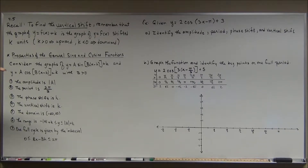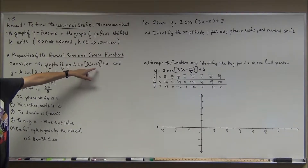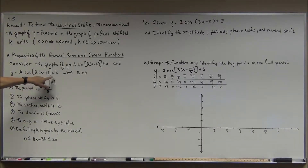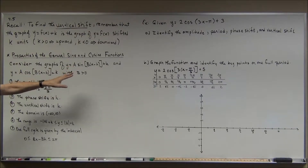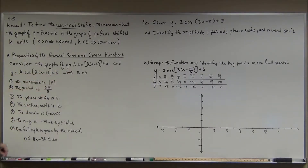Consider the graphs y = a·sin(b(x - h)) + k and y = a·cos(b(x - h)) + k, with b greater than zero — we're not going to consider reflections in the y-axis unless necessary. The amplitude for both of these graphs is the absolute value of a. Remember, if a is negative, the graph is reflected in the x-axis.